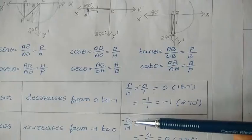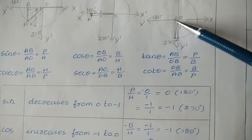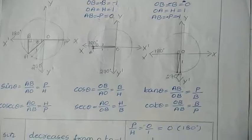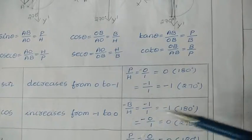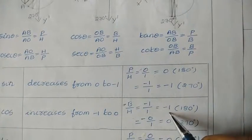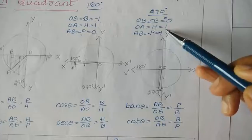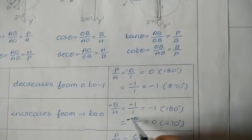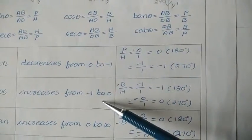Next, cosine is base upon hypotenuse, but the base is a negative value since we are on the negative x-axis. At 180 degrees, base is minus 1, so minus 1 upon 1 equals minus 1. For 270 degrees, base is 0 and hypotenuse is 1, so 0 upon 1 equals 0. No need to take the negative sign when the value is 0. So cosine value increases from minus 1 to 0.